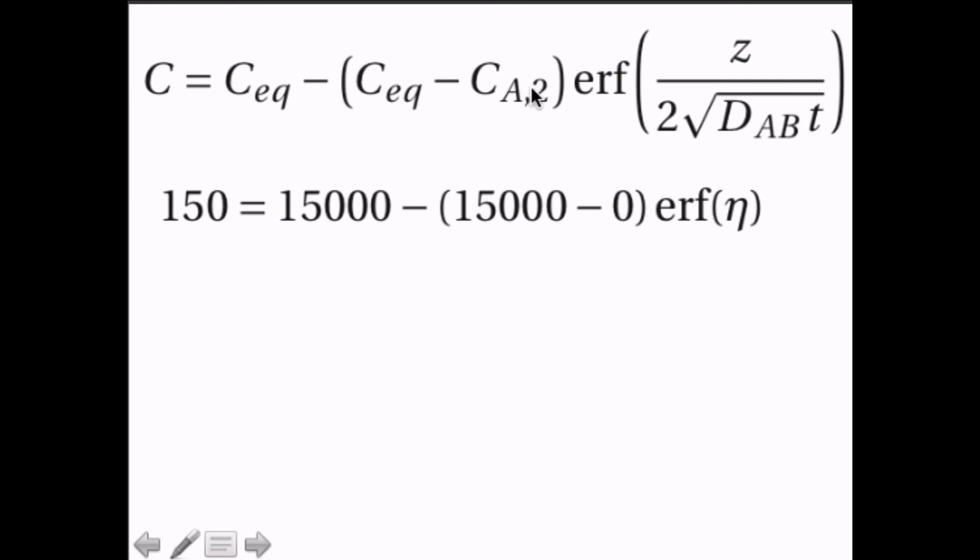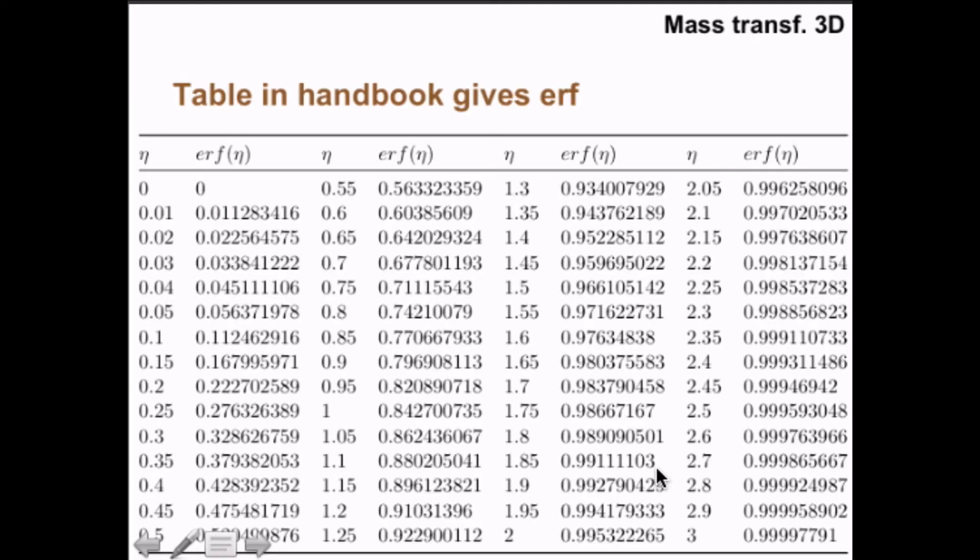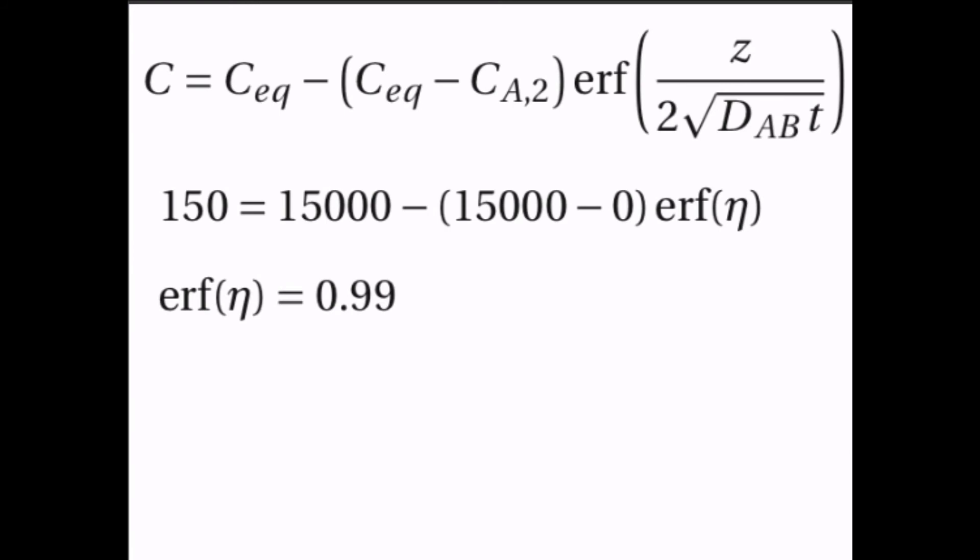We are looking for a concentration here of 150, and we know that if we wait long enough so that we have the same concentration as outside, we will have 15,000. So this is the concentration in the other medium, which we might reach if we wait very long. And so we have 15,000, and we start with the concentration of 0, and then we have the error function of something, let's just call it eta to start with, and we can calculate what the error function should be here, and that's 0.99. If you look that up in a table, you see that this is 1.8, 1.85, it's something between 1.8 and 1.85. And if you have a better table, you can get 1.83.